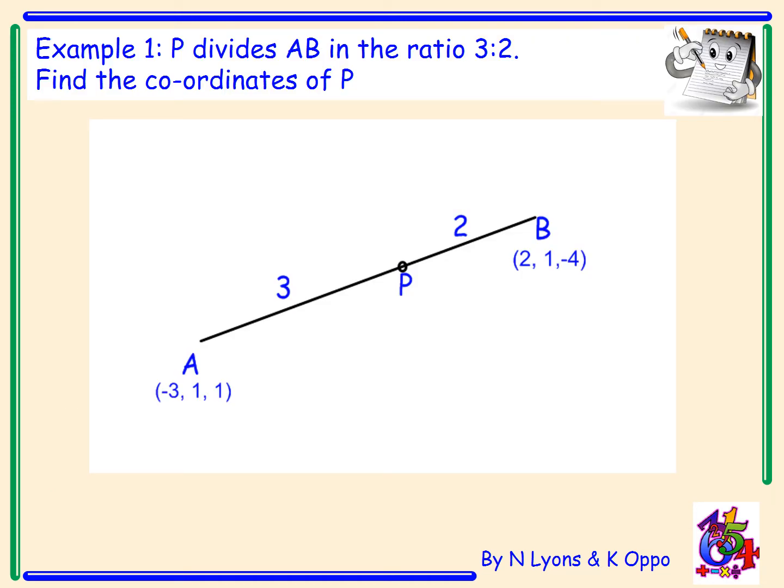Look at Example 1. Point P divides the line AB in the ratio 3 to 2. The question says find the coordinates of point P. Let's look at the diagram. It's always useful to draw a diagram to help visualize the problem. I've got point A with coordinates (-3, 1, 1), a line then joins to B with coordinates (2, 1, -4). P has been put onto the diagram showing that if AP equals 3, PB equals 2. That's splitting AB in the ratio 3 to 2.